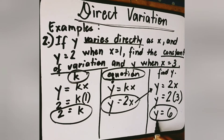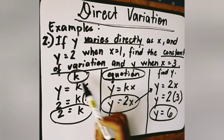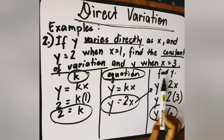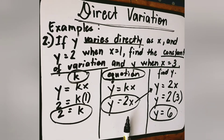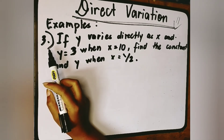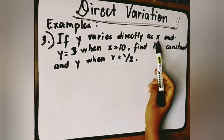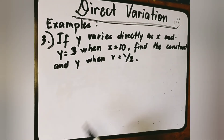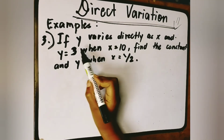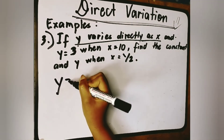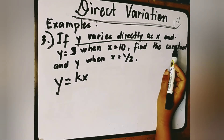We now have the value of y. We have finished solving example number 2 — we found the constant k, the equation of variation, and the value of y. Again, that's how easy it is to solve direct variation. Let's have the last example, example number 3: if y varies directly as x and y is equal to 3 when x is equal to 10, find the constant and y when x is equal to 1 half.